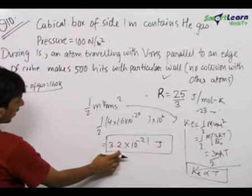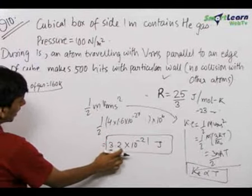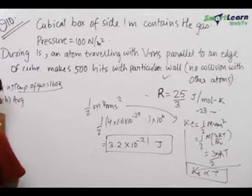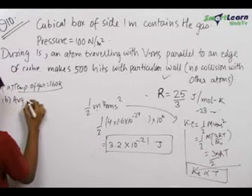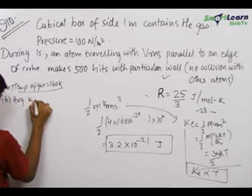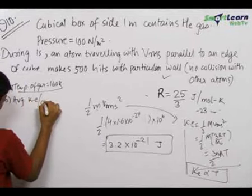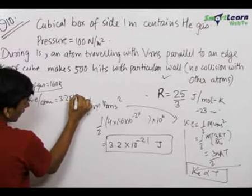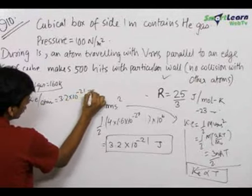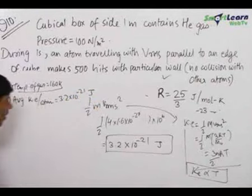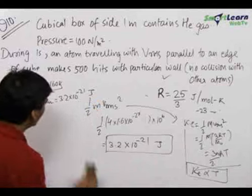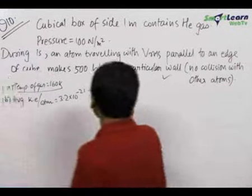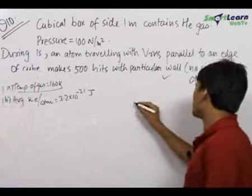The final answer for average kinetic energy per atom comes out to be 3.2 × 10⁻²¹ joules. For the third part, we need to find the total mass of helium gas in the box.